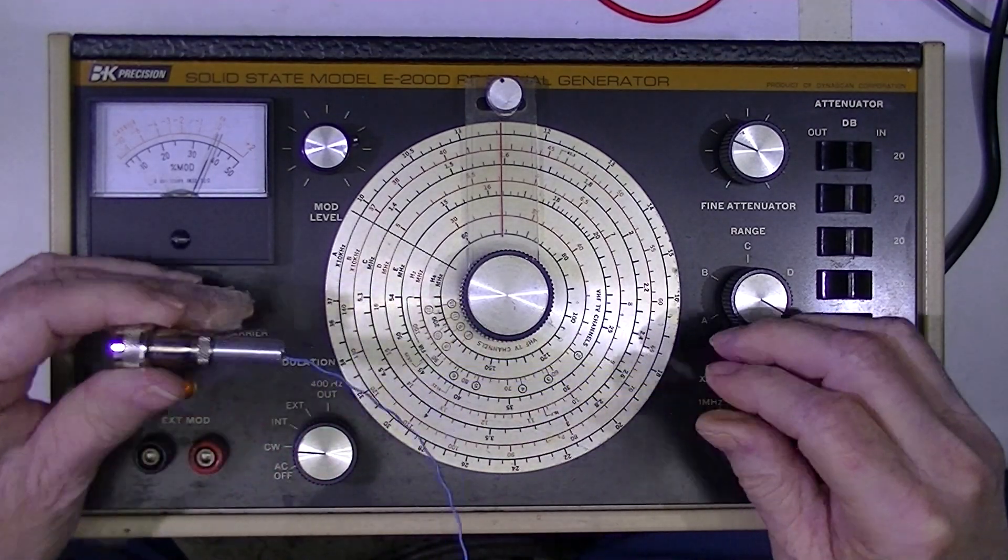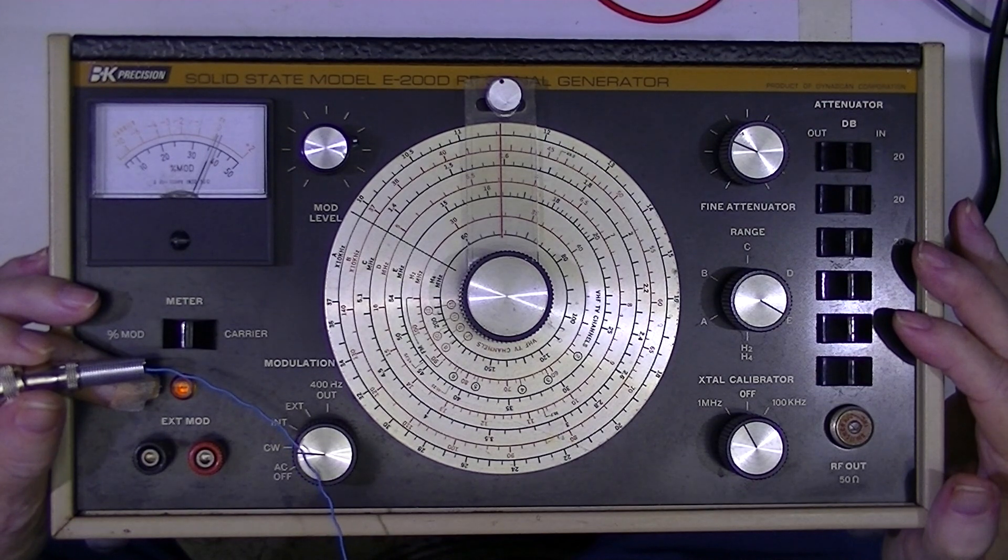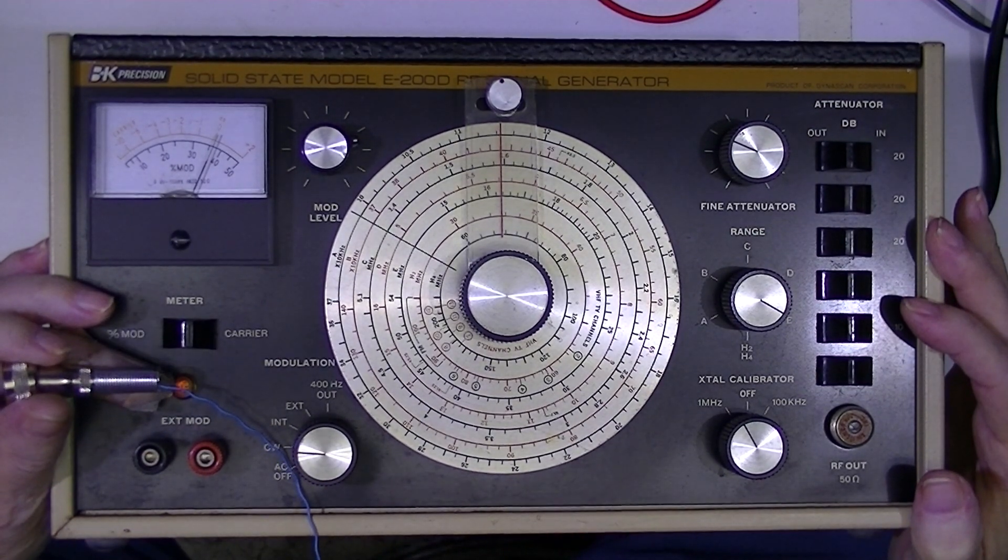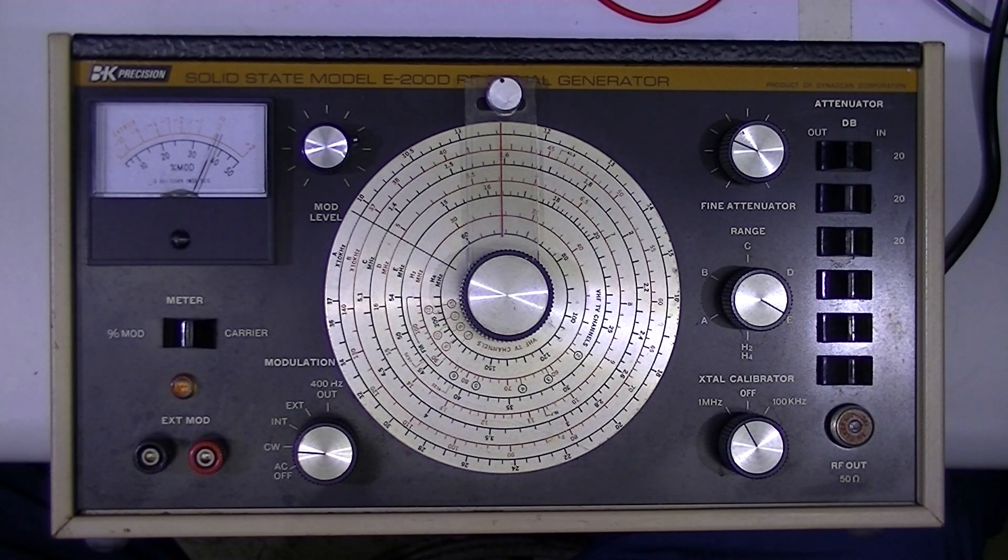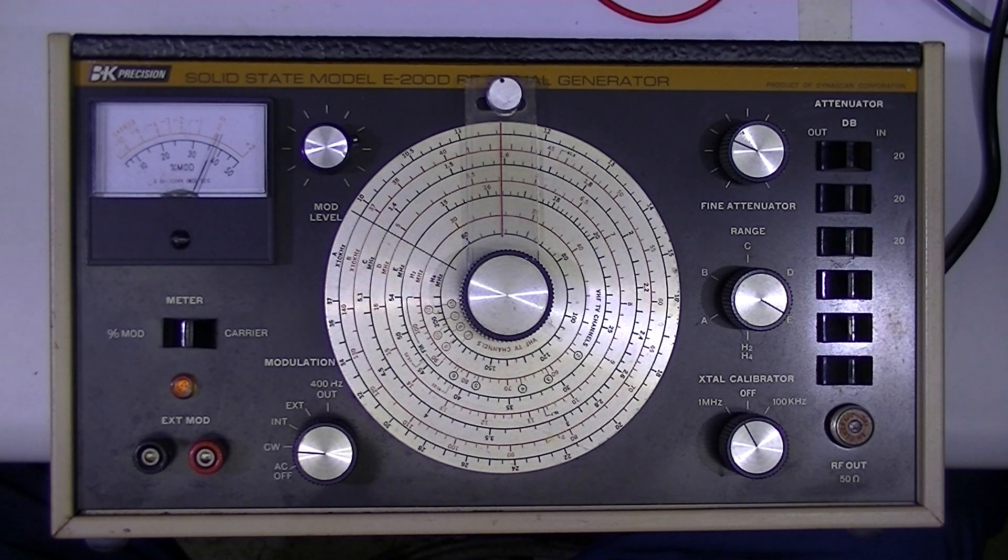They were very popular on lower end test equipment. Heathkit, Nightkit, Ico, B&K. You would not have found these on any of the higher end test equipment. Certainly not in Hewlett Packard, Tektronix.